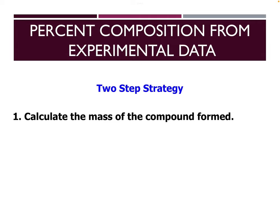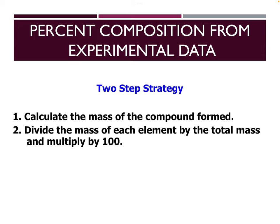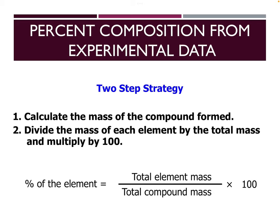We were just learning how to calculate percentage composition from a chemical formula — this is called the theoretical percentage composition. We can also do this from experimental data. If we run an experiment and collect data, we can use that data to determine the percentage composition of elements in our compound. Our first step is to calculate the mass of the compound formed, usually by weighing your product. Then we'll have collected data on the masses of each element, and use: mass of element divided by total mass times 100.